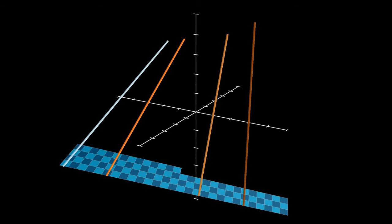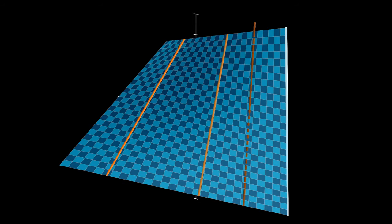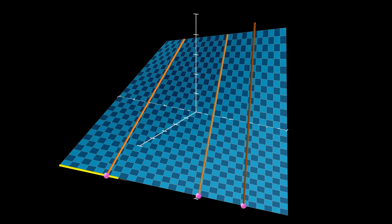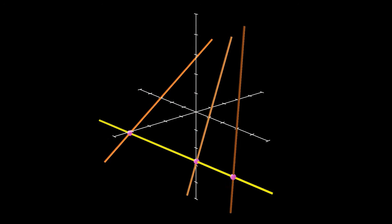Even in our special case of a hyperbolic paraboloid, the three given lines lay on one ruling and any line on the opposite ruling intersects all three given lines.